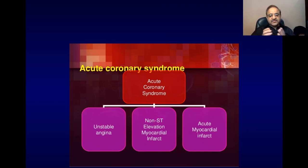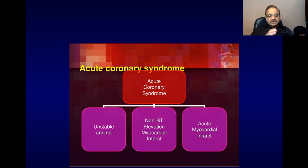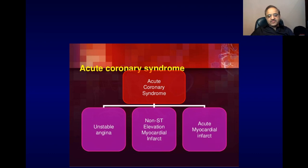Acute myocardial infarction is a different condition in which there is rupture of the unstable plaque, followed by deposition of platelets, and on top of that platelet there is formation of a red thrombus which completely occludes the coronary artery. All three conditions are emergency conditions and the patient needs hospitalization, but in acute myocardial infarction — time is myocardium — the patient needs to be hospitalized as early as possible so that the thrombus is removed by primary angioplasty or, if not available, thrombolytic therapy.